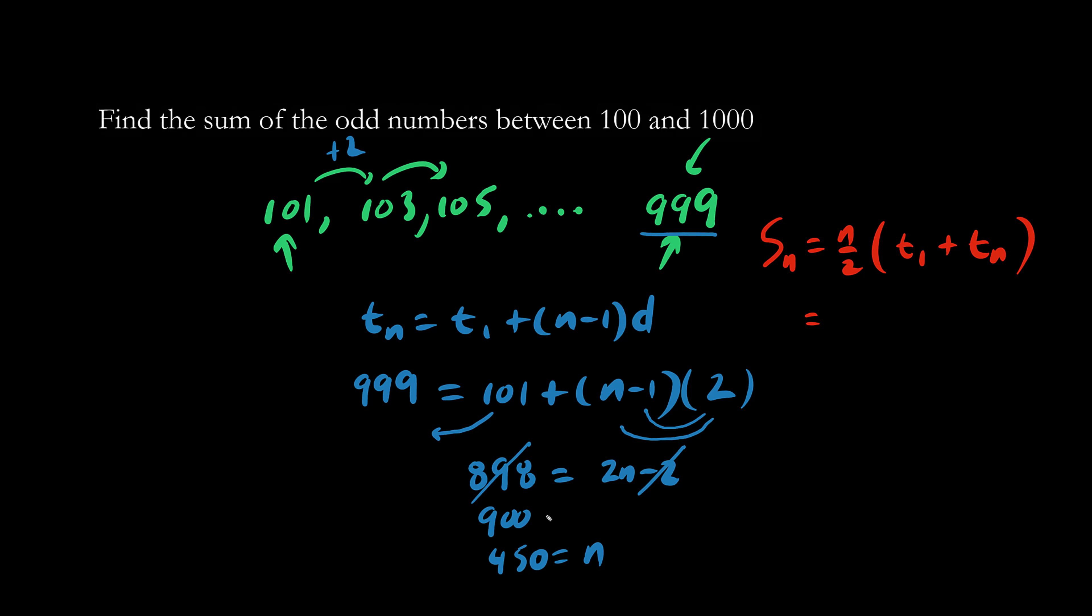So we found out that n is 450. And our first term is 101. And our last term, Tn, is 999.